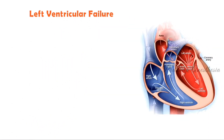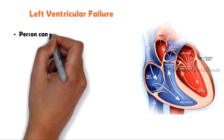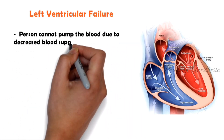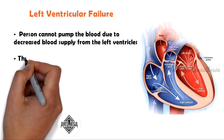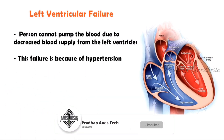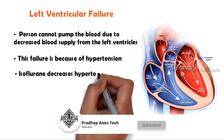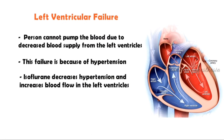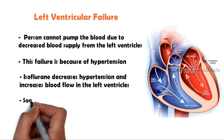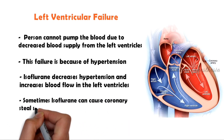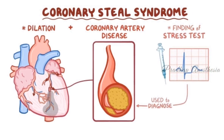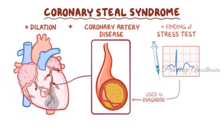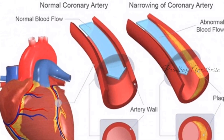Left ventricular failure is a medical condition in which a person cannot pump blood due to decreased blood supply from the left ventricles. This failure is because of hypertension. Isoflurane decreases hypertension and increases blood flow in the left ventricles, so it is the drug of choice for left ventricular failure. Sometimes isoflurane can cause coronary steal syndrome — a phenomenon where an alteration of circulation leads to decreased blood flow to the coronary circulation, decreasing blood pressure.